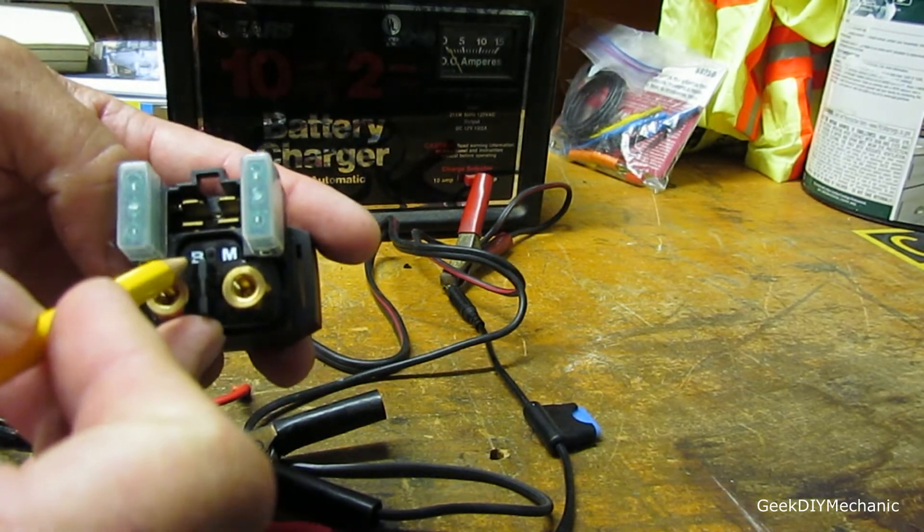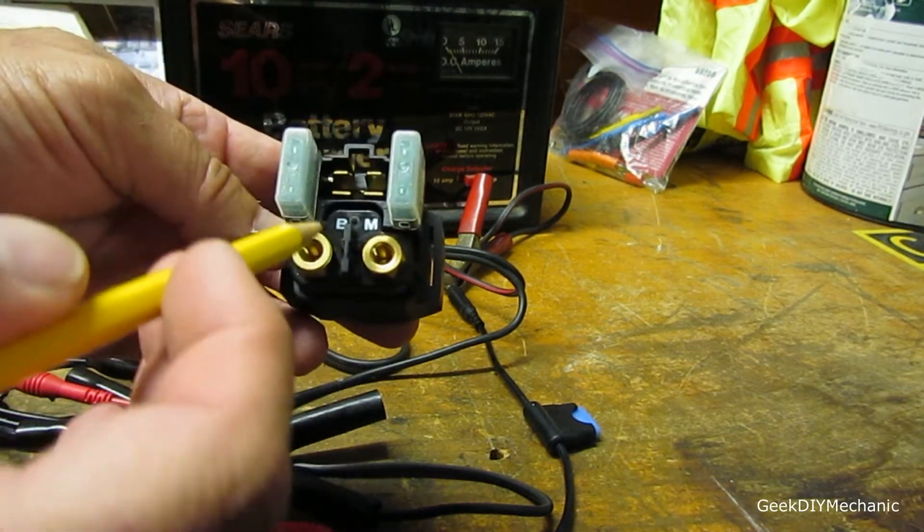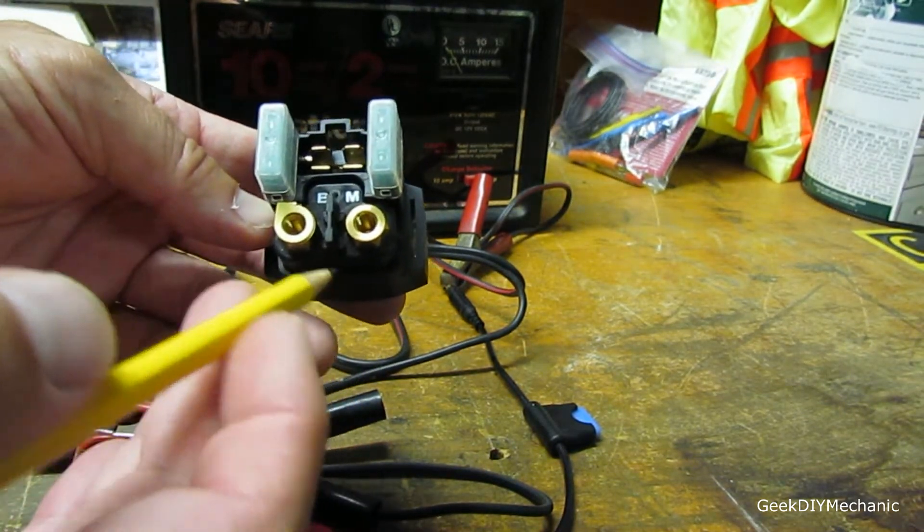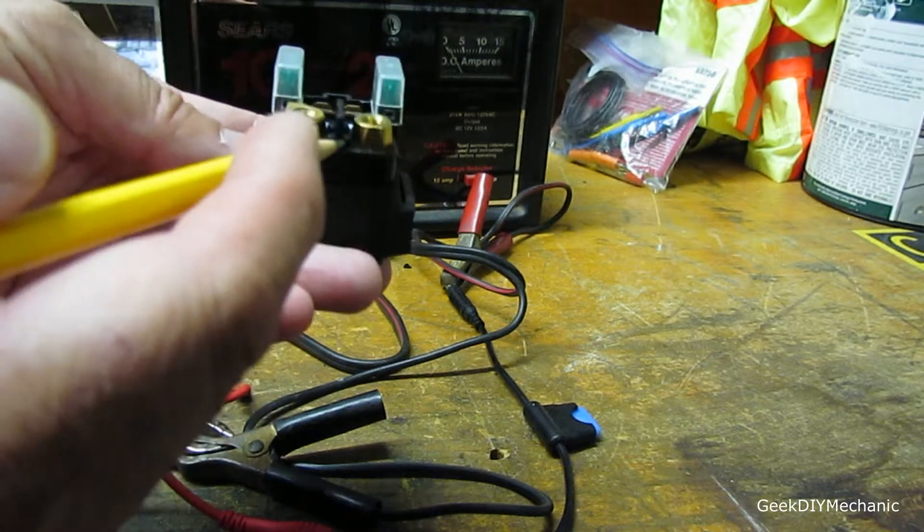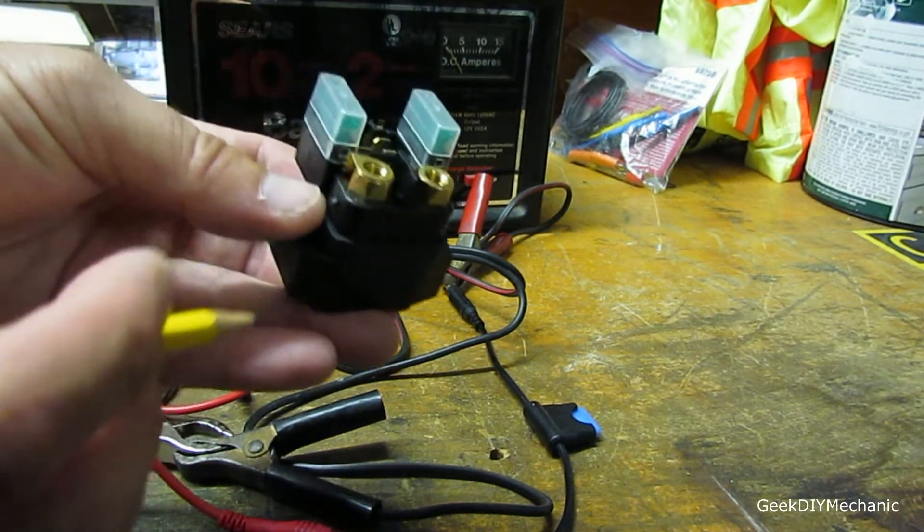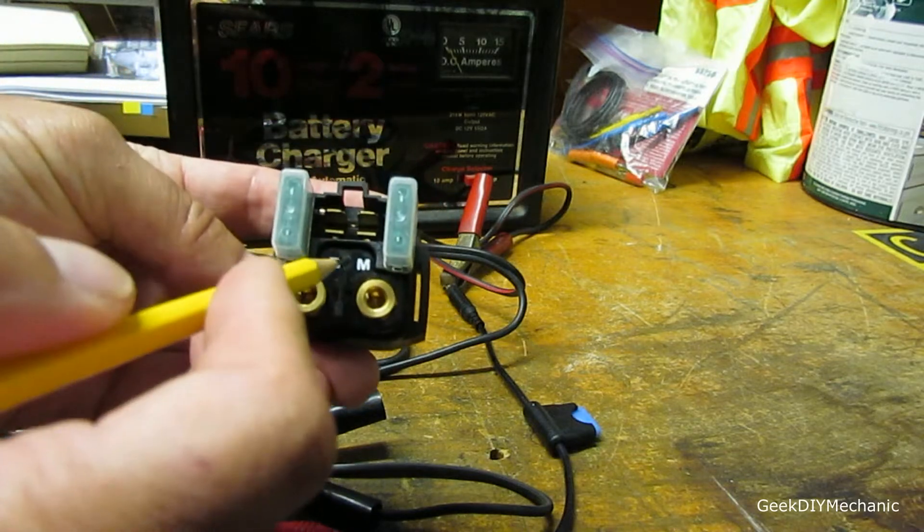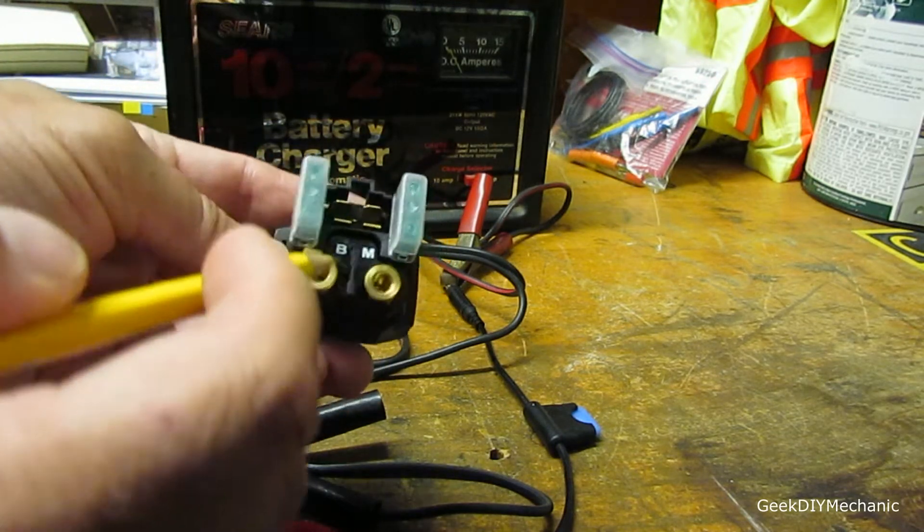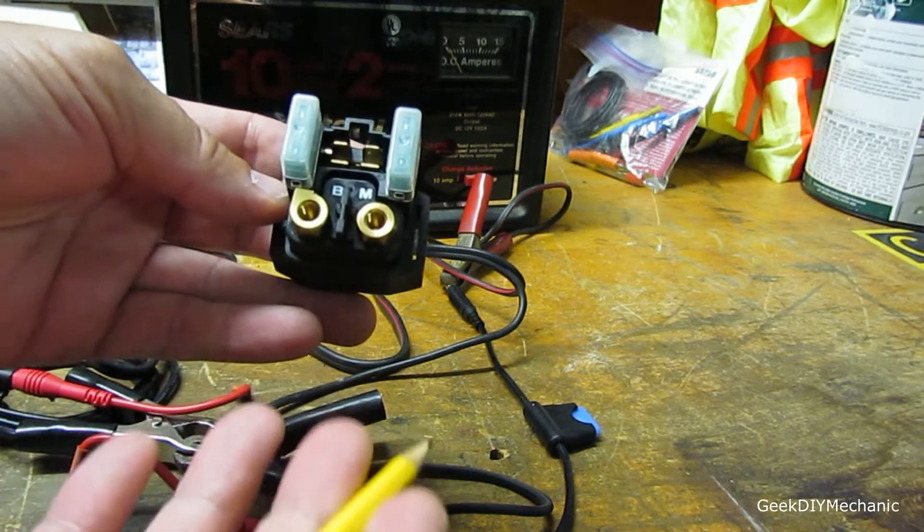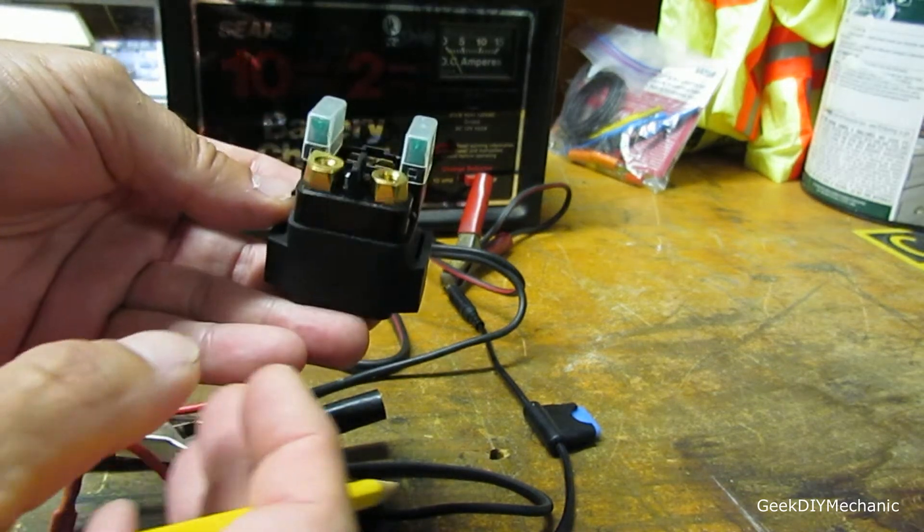B stands for battery. But what I've noticed is not all relays are marked. But it's easy to tell which should go to battery because battery is the one where it's connected to this fuse. And we'll go over why that is in a second. B stands for battery, the one connected to the fuse. And M, in this case, went to the load, which was the starter on this Ducati I worked on.